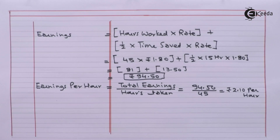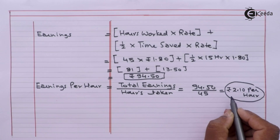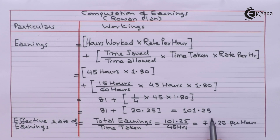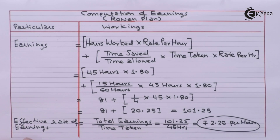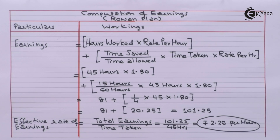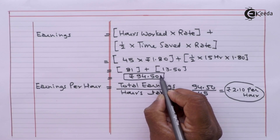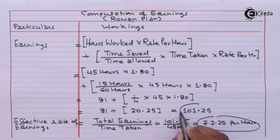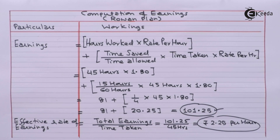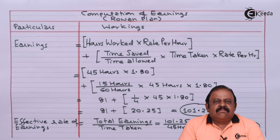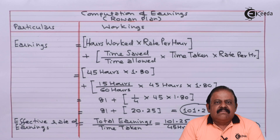Under the Halsey plan, the effective rate was 2 rupees 10 paise, and under the Rowan plan it is 2 rupees 25 paise. So from the worker's point of view, the Rowan plan is better than the Halsey plan. Total earnings under Halsey were 94 rupees 50 paise, while under the Rowan plan total earnings are 101 rupees 25 paise. Thus in this question we have compared total earnings and the effective rate of earnings under both plans, finding that the Rowan plan is better for workers.